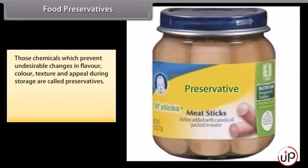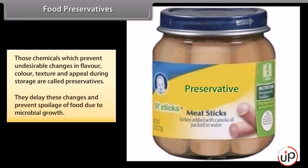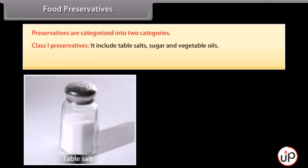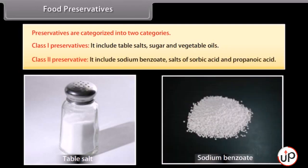Food preservatives. Those chemicals which prevent undesirable changes in flavour, colour, texture and appeal during storage are called preservatives. They delay these changes and prevent spoilage of food due to microbial growth. Preservatives are categorised into two categories: Class 1, which includes table salt, sugar and vegetable oils; and Class 2, which includes sodium benzoate, salts of sorbic acid and propanoic acid.